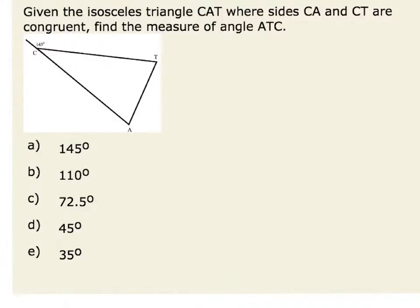In this problem, we are given isosceles triangle CAT, where side CA is congruent to side CT. We want to find the measure of angle ATC.